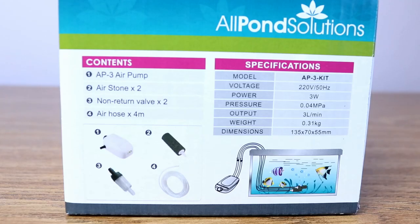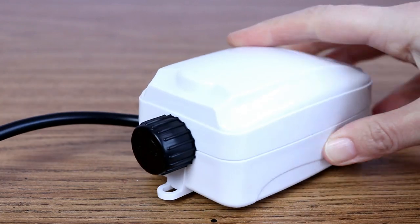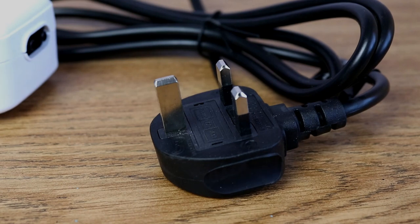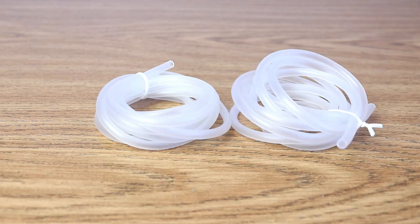Straight away one of the things that really appealed to me about this kit is the fact that it comes with everything that you need, including the air pump itself, a power cable with UK plug which is always nice to see, it's amazing how often these things come with European ones, and a generous 4 meters of airline hose cut into two 2 meter sections.